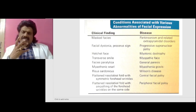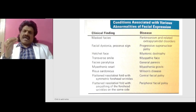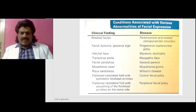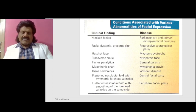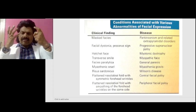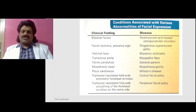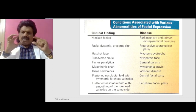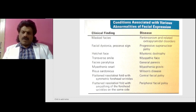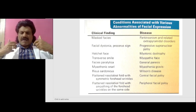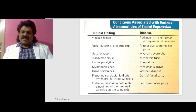Other conditions associated with various abnormalities of facial expression are: masked facies seen in Parkinson's and related extrapyramidal disorders; facial dystonia or procerus sign — the surprise sign — seen in progressive supranuclear palsy; hatchet face seen in myotonic dystrophy; transverse smile seen in myopathic face; facial paralytica seen in general paralysis of the insane; myasthenic snarl seen in myasthenia gravis; and risus sardonicus seen in Wilson's disease.